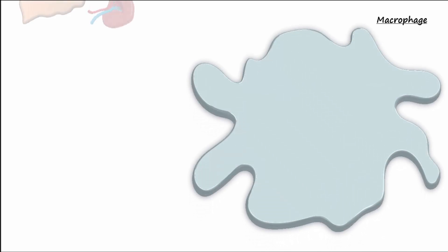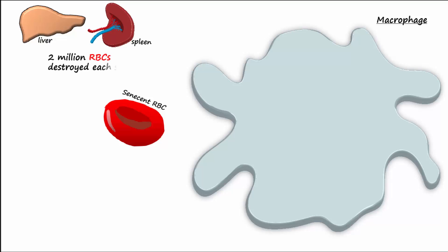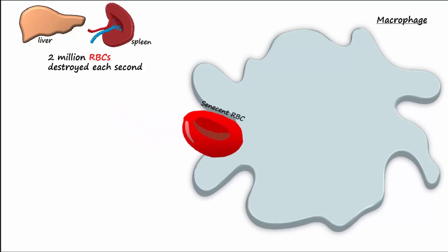As just mentioned, one of the important functions of macrophages — primarily of the spleen and also the liver — is to break down senescent or old red blood cells. Erythrocytes live for about 120 days, and about 2 million red blood cells are destroyed each second, with phagocytosis beginning the process.